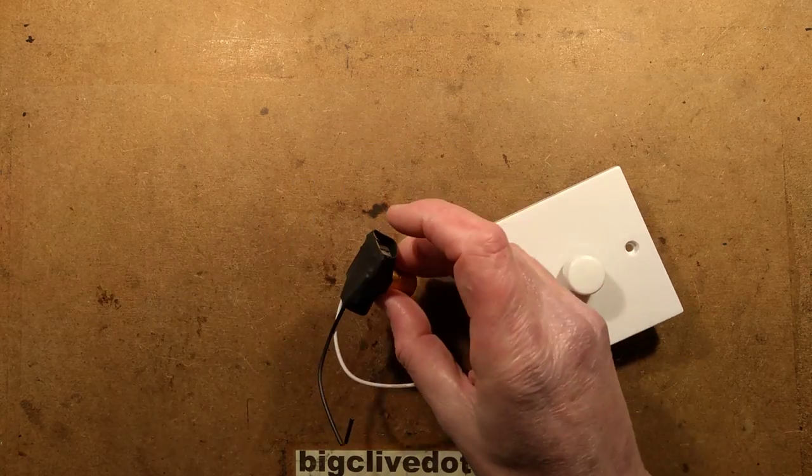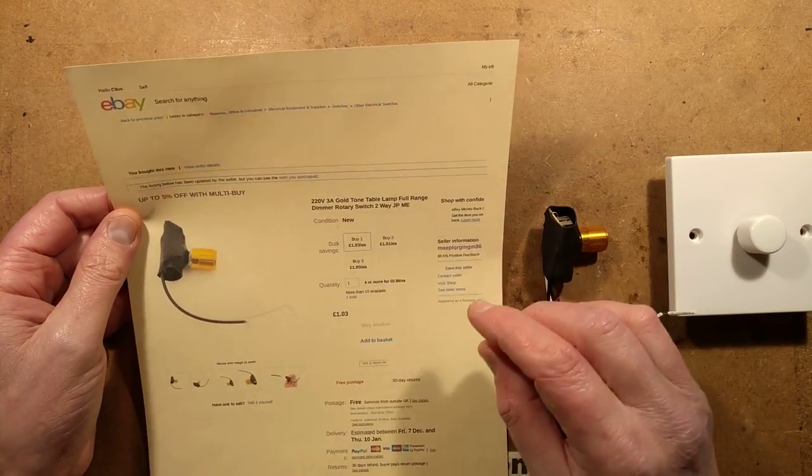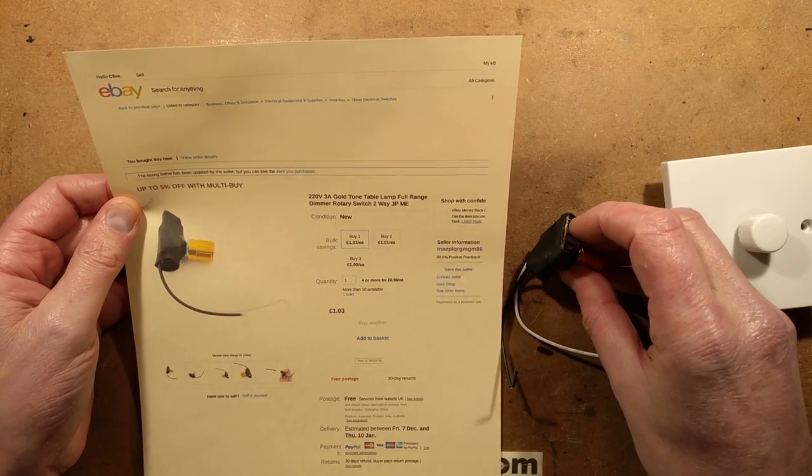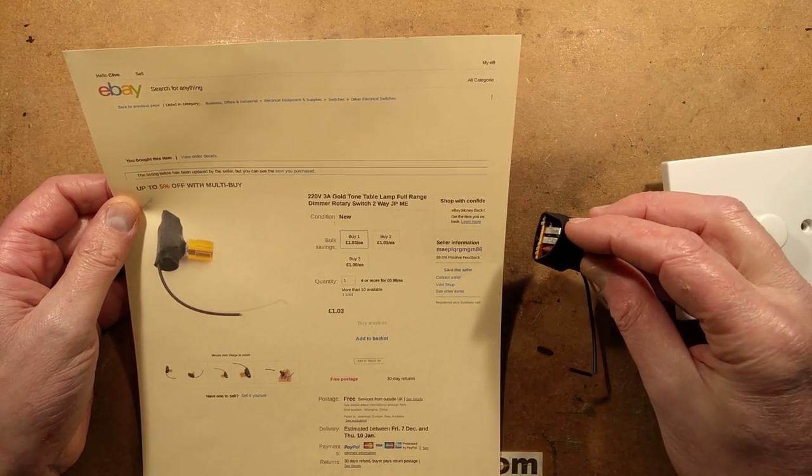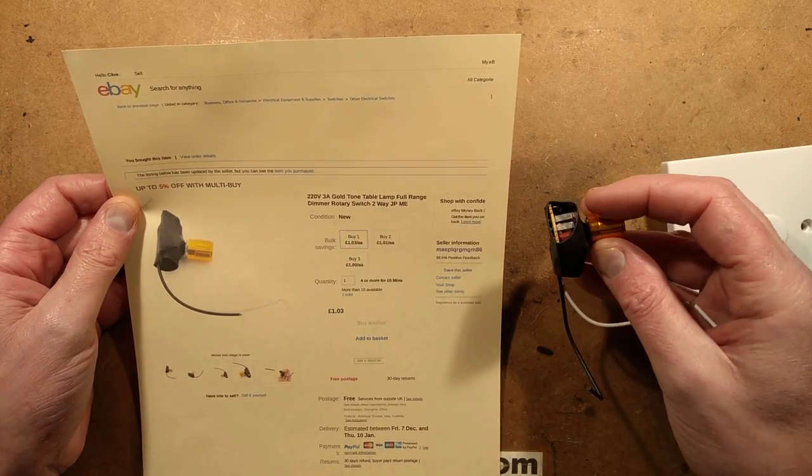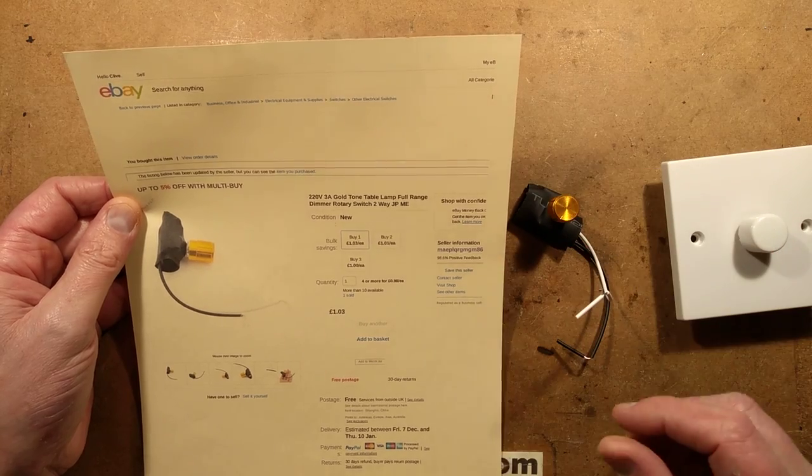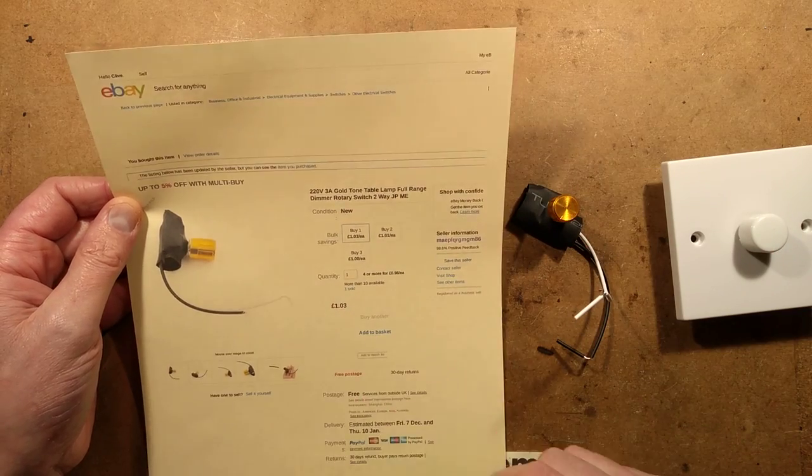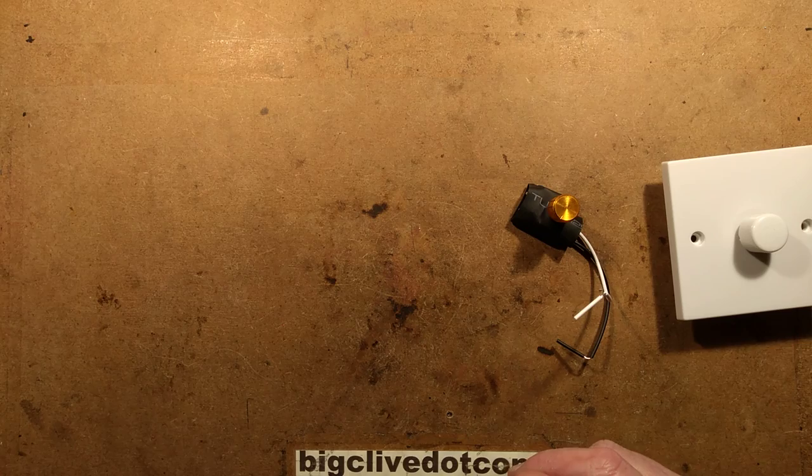So this is the module of interest initially. It's described as 220 volt, 3 amp, gold tone, table lamp, full range dimmer, rotary switch, 2 way. It came in at £1.30 in this instance which is buttons really.